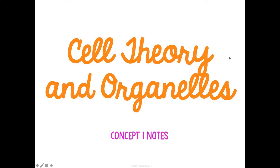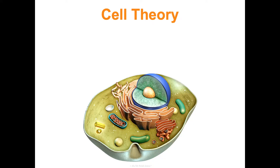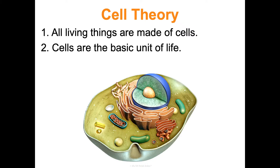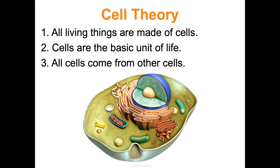Concept one of unit two: cells. We are going to talk about cell theory and essential organelles. First, what is cell theory? These are three things we know to be true about cells: first, all living things are made of cells; second, cells are the most basic unit of life; and third, all cells come from other cells. We'll focus on the first two ideas in this concept.